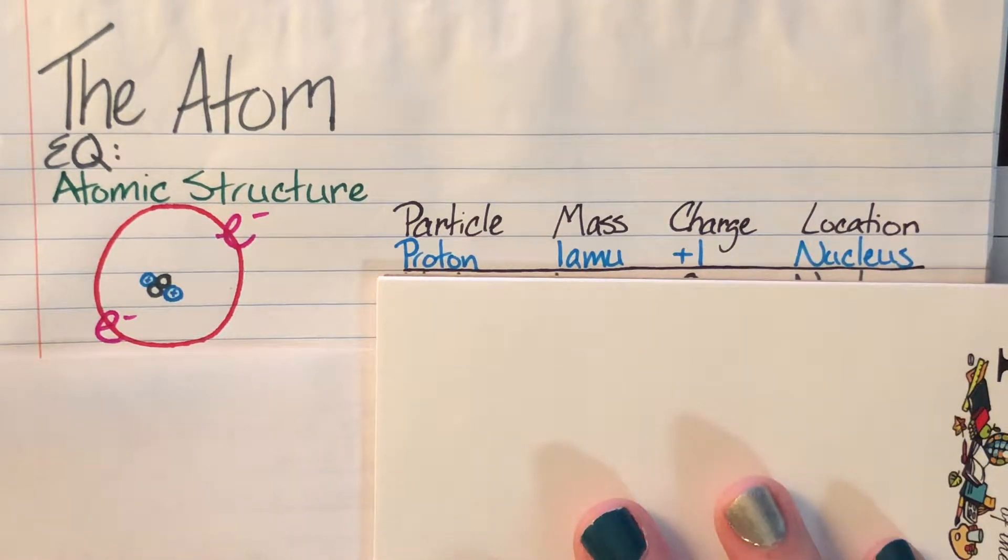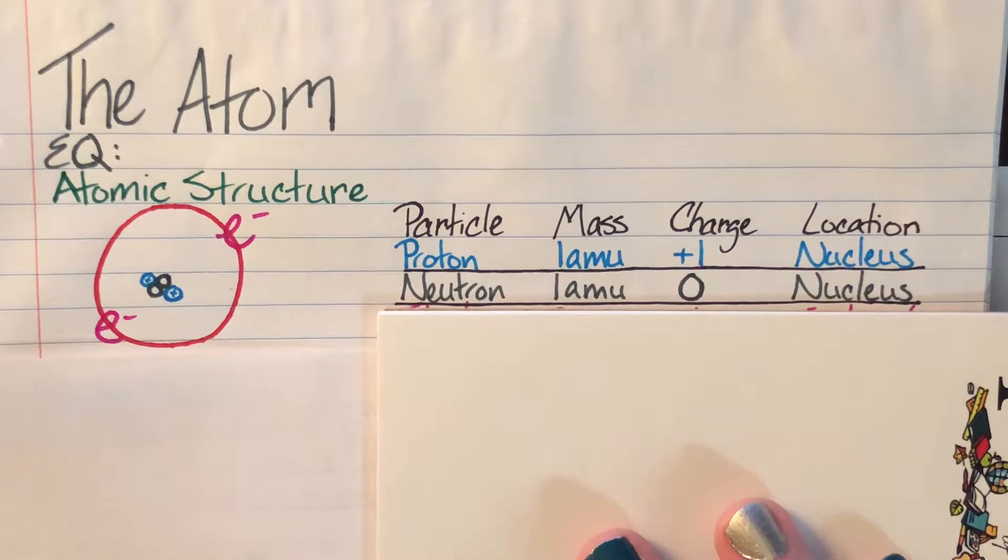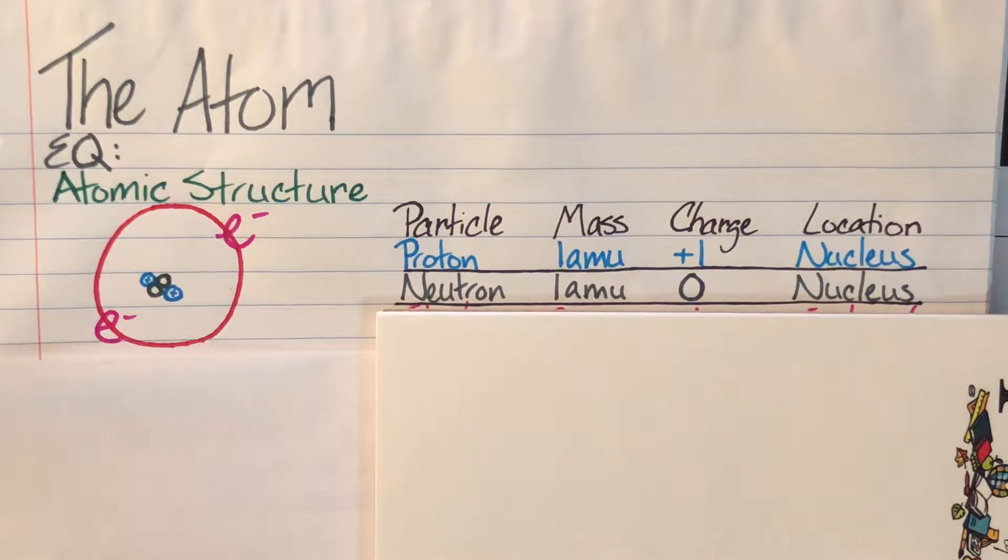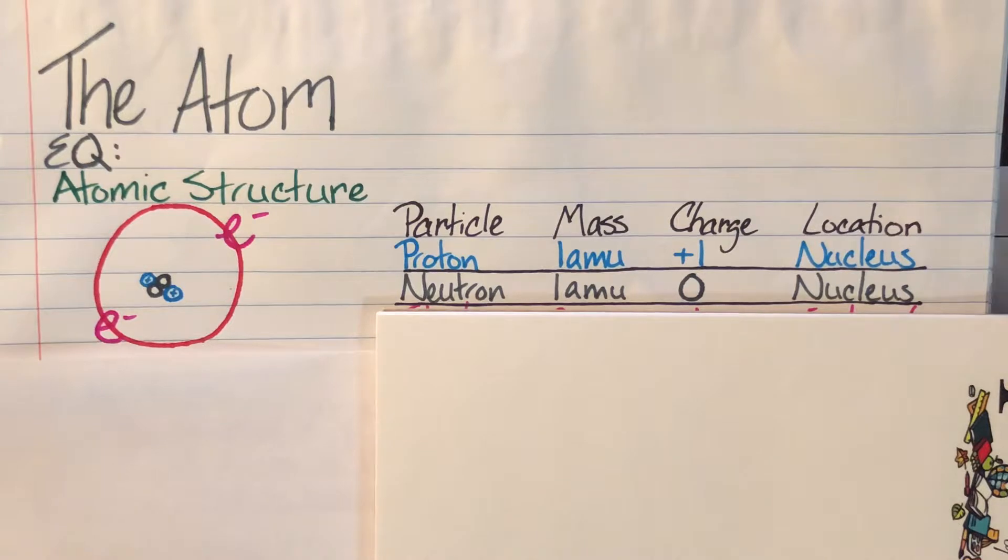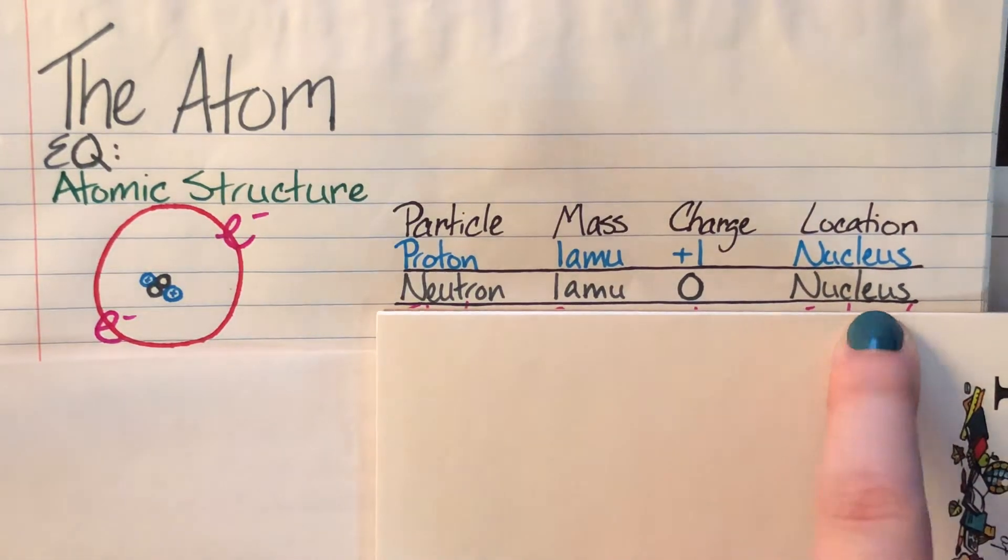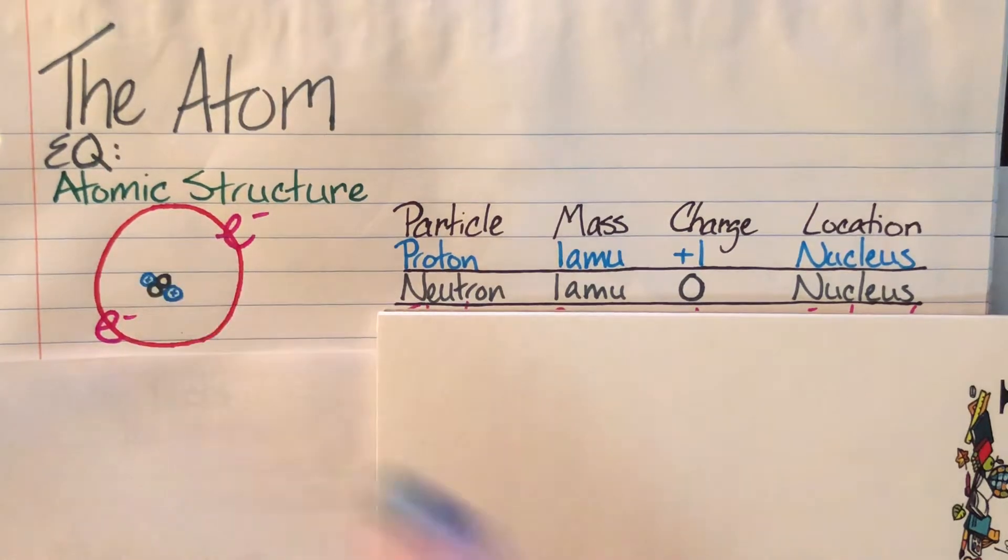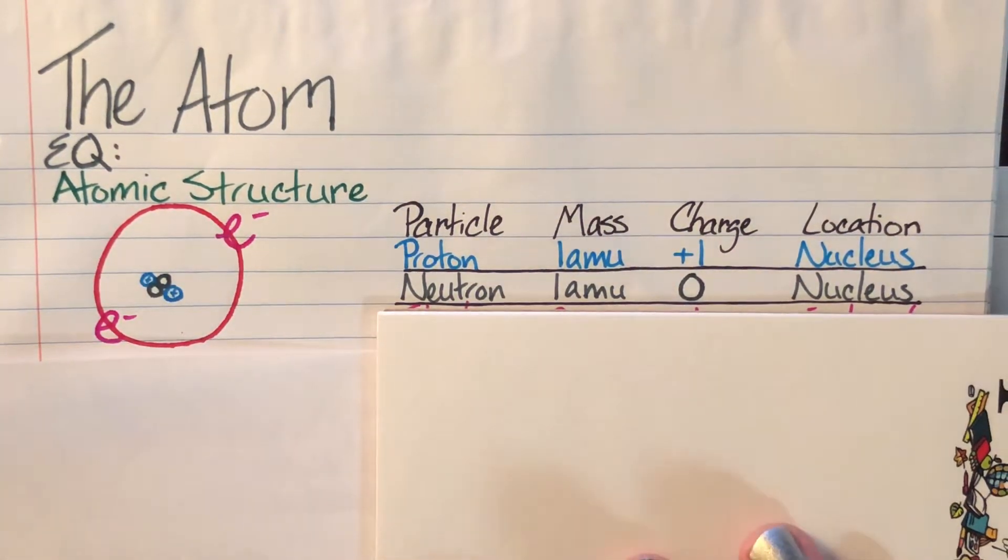The next particle that we are going to talk about is going to be the neutron. The neutron also has a mass of one AMU. However, it does not have a charge, but it is located with the proton. These gray dots in here, that is going to be our neutrons, and they are also in the nucleus.